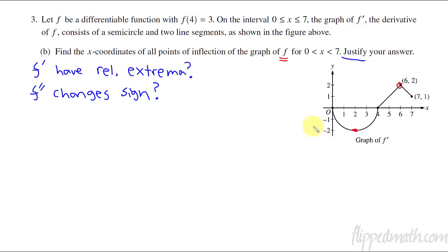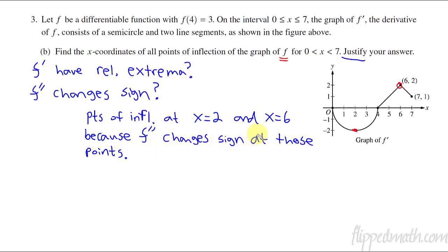Okay, so we can say at those two points, so we've got points of inflection, if I knew how to spell here, points of inflection at x equals two and x equals six because, and I tend to always go with the second derivative because I equate points of inflection with the second derivative, because f double prime changes sign at those points. And another justification you could say, so instead of saying because f second derivative of f changes sign at those points, you could say because f prime has relative extrema at those points. That would be another justification that you could say at that. But so it's x equals two and x equals six were the two points.